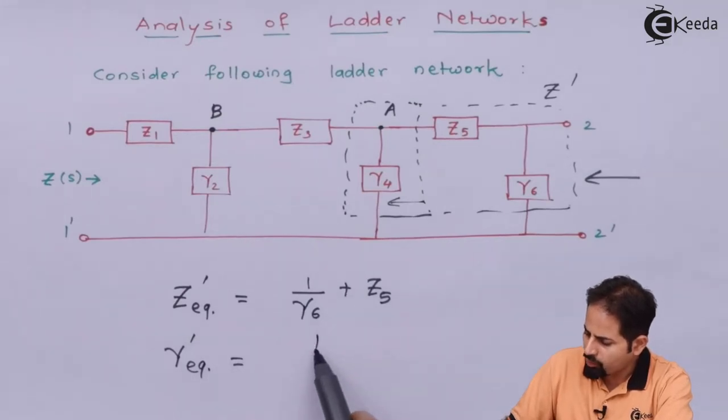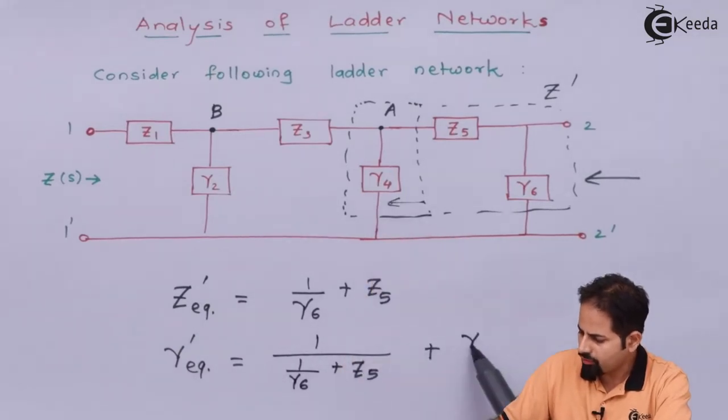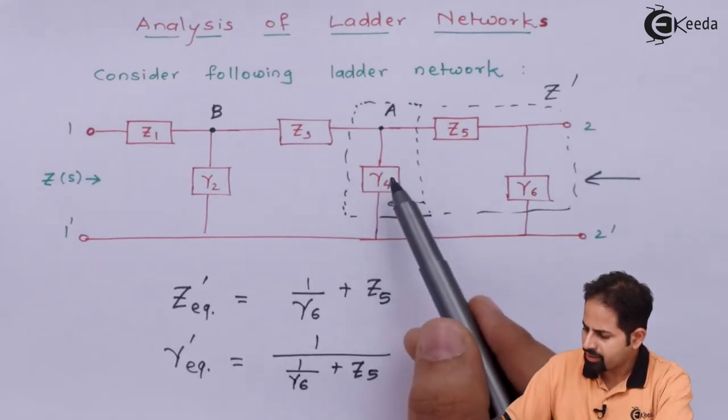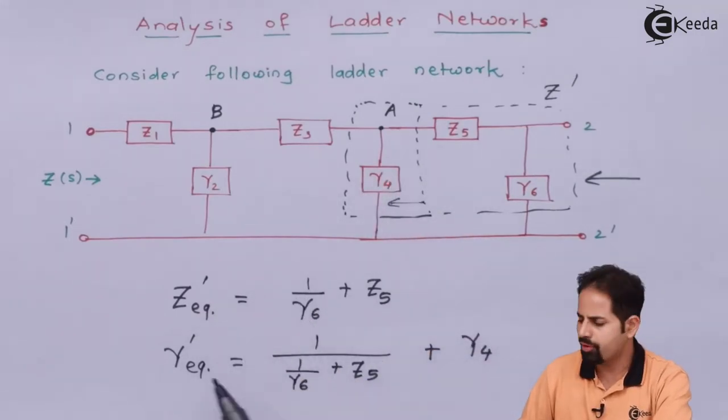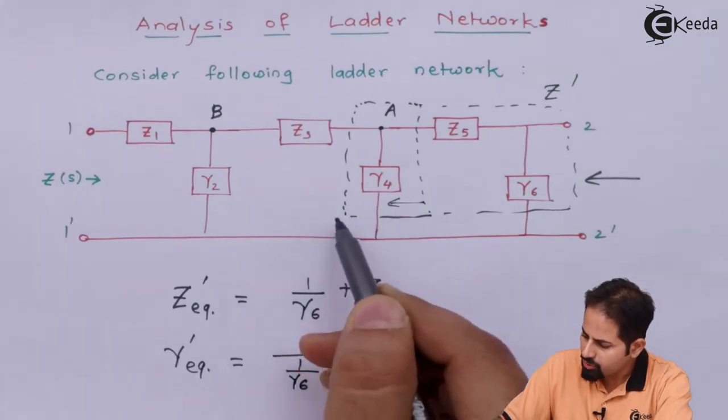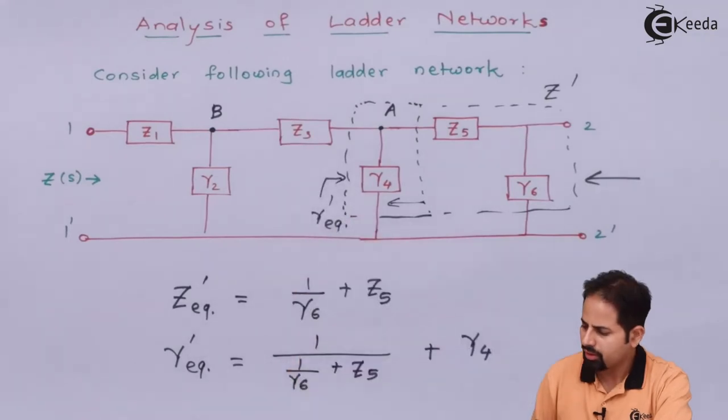And so you will get new admittance which is called as Y dash equivalent and that will be equal to 1 upon reverse of this plus Y4. So for adding admittance, we reverse this and we got the equivalent admittance which is Y dash equivalent. So this can be called as Y dash equivalent, this particular box.